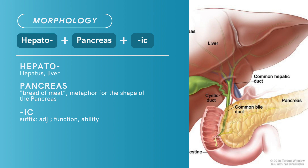Term morphology: compound of hepato plus pancreas plus -ic. Hepato is derived from 'hepatos,' meaning the liver. Pancreas is a metaphor for the shape of the pancreas, which looks like bread — therefore, pancreas means 'bread of meat.' -IC is a suffix and adjective denoting function and ability. There you have it — compound terms: hepato-pancreatic ampulla and hepato-pancreatic ampulla sphincter.